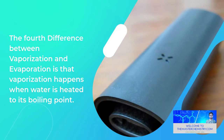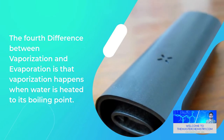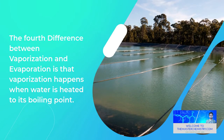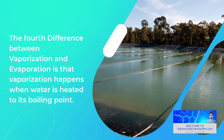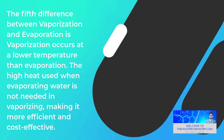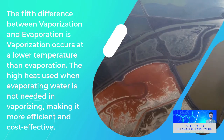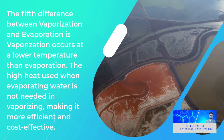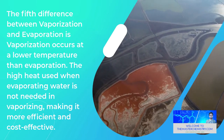The fourth difference between vaporization and evaporation is that vaporization happens when water is heated to its boiling point. The fifth difference is that vaporization occurs at a lower temperature than evaporation — the high heat used when evaporating water is not needed in vaporizing, making it more efficient and cost effective.